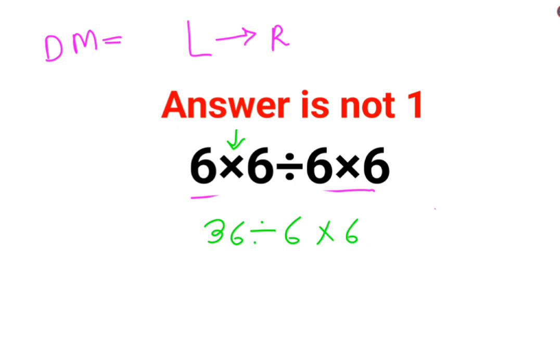The next operation from your left hand side to be done is this division. So 36 divided by 6 is 6, multiplied by 6. So the answer for this question is supposed to be 36.